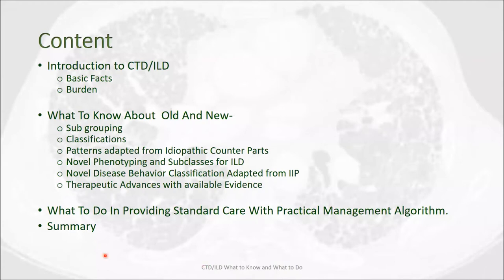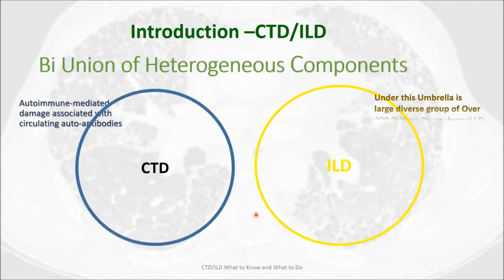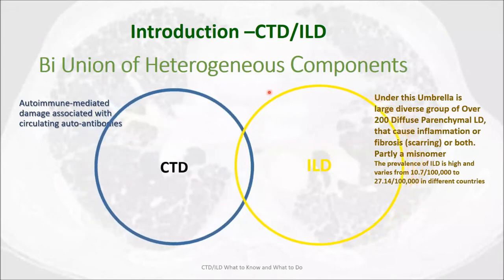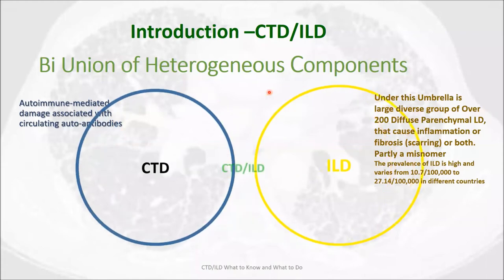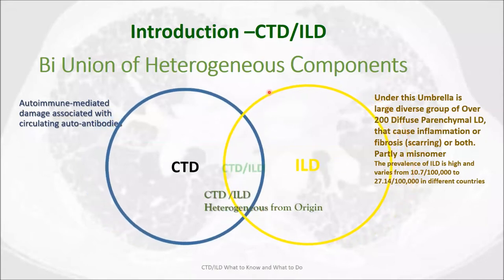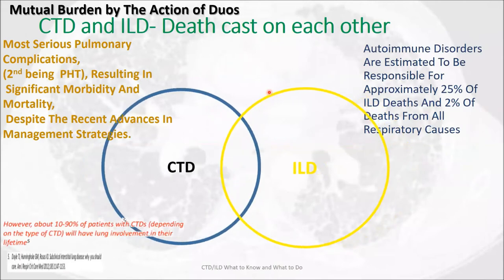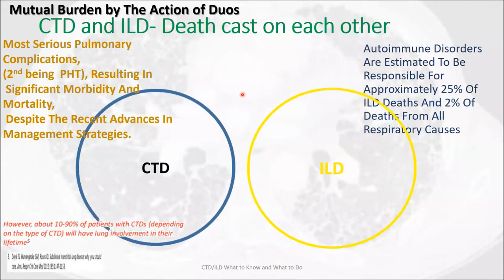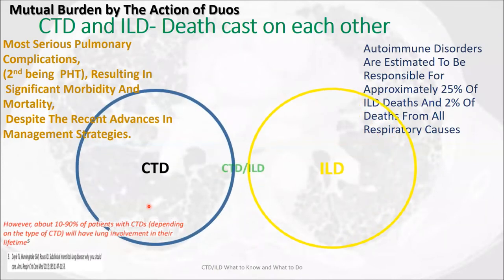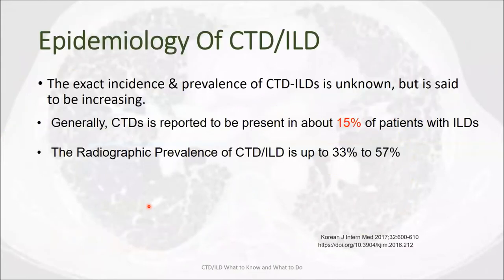Before summing up, we will move to see what to do in providing standard care with a practical management algorithm. I would like to introduce connective tissue disease related ILD as a heterogeneous group of disorders, resulting from the union of heterogeneous components — namely connective tissue disease and interstitial lung disease. There will be mutual burden by the action of these disorders upon each other.